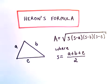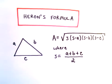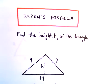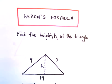All right, in this video we're going to do another example using Heron's formula. So in this case, what we have is we want to find the height of a triangle. And the side lengths are 9, 7, and 14.